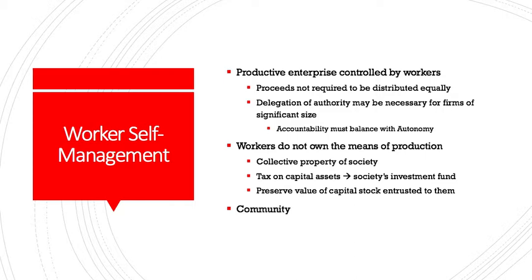When we look at worker self-management, the workers are in charge of the productive enterprise, whatever that might be. So a factory for making ugly sweaters, for instance, is going to be controlled by the workers, just as a factory for making pumpkin pies will also be controlled by the workers. There are decisions that need to be made in every worker cooperative, and those decisions will be shared democratically by the workers. That does not mean, of course, that the proceeds from their enterprise will be distributed equally. The workers themselves will have to determine how those proceeds will be distributed, including considerations of needs, contributions, seniority, and other concerns.